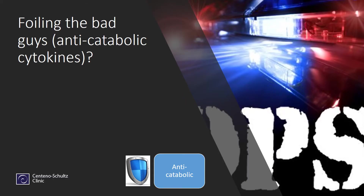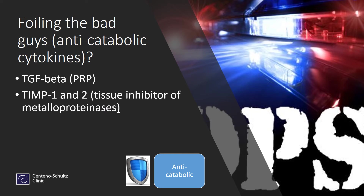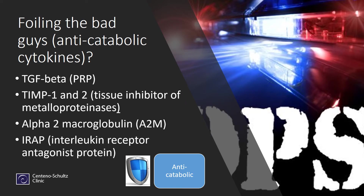How would we foil the bad guys — how would we stop the guys that are breaking things down? This is anti-catabolism. TGF-beta, which is a growth factor found in PRP, can do that. TIMP1 and TIMP2, which are naturally occurring anti-catabolic cytokines, can do that. Alpha-2 macroglobulin can do that, and IRAP can do that.